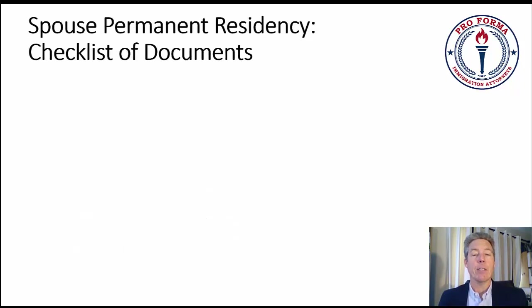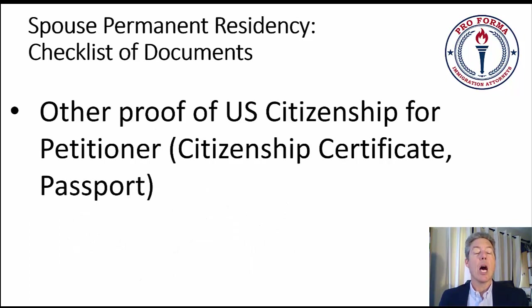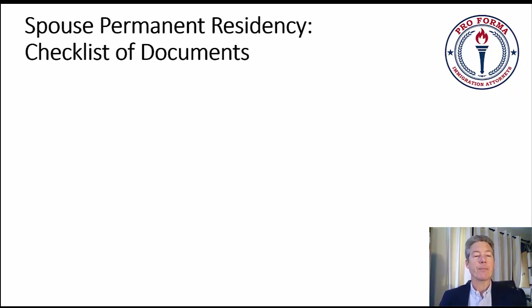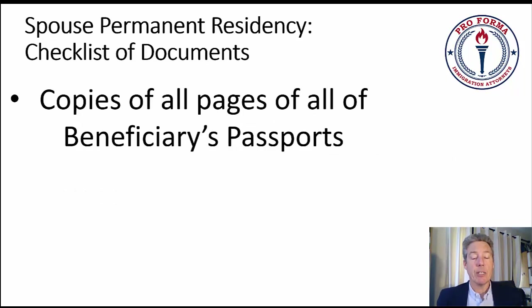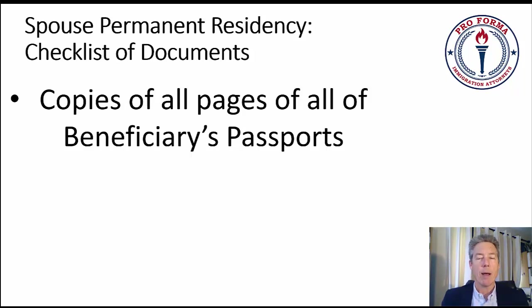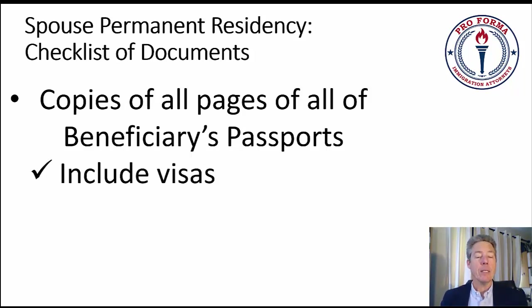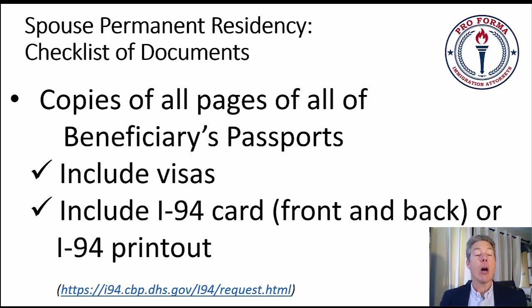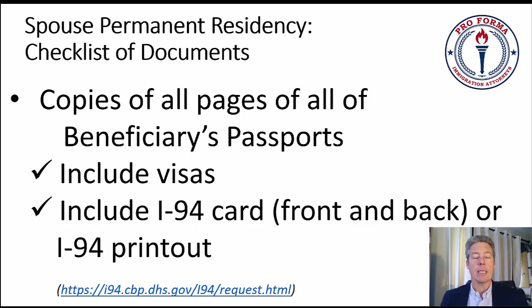The beneficiary also needs two photos for the I-485, two for the I-765, and two for the I-131 — a total of eight photos for the beneficiary. Other proof of U.S. citizenship for the petitioner, like a citizenship certificate or a passport. Copies of all pages of all beneficiary passports — we want the immigration service to see everywhere that person has traveled. This includes the visas in there, and also an I-94 card front and back, or the I-94 printout from the I-94.cbp website.